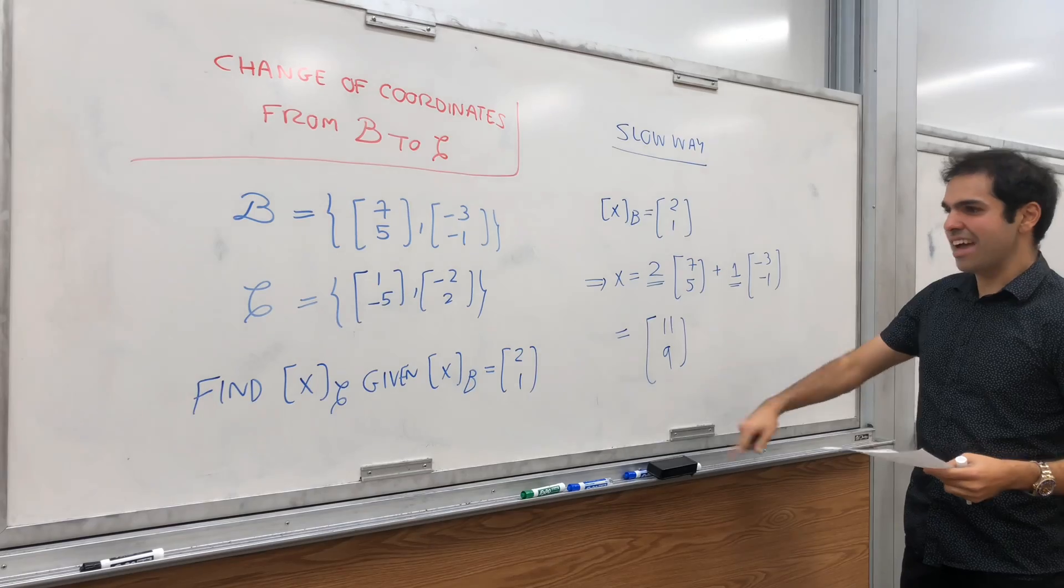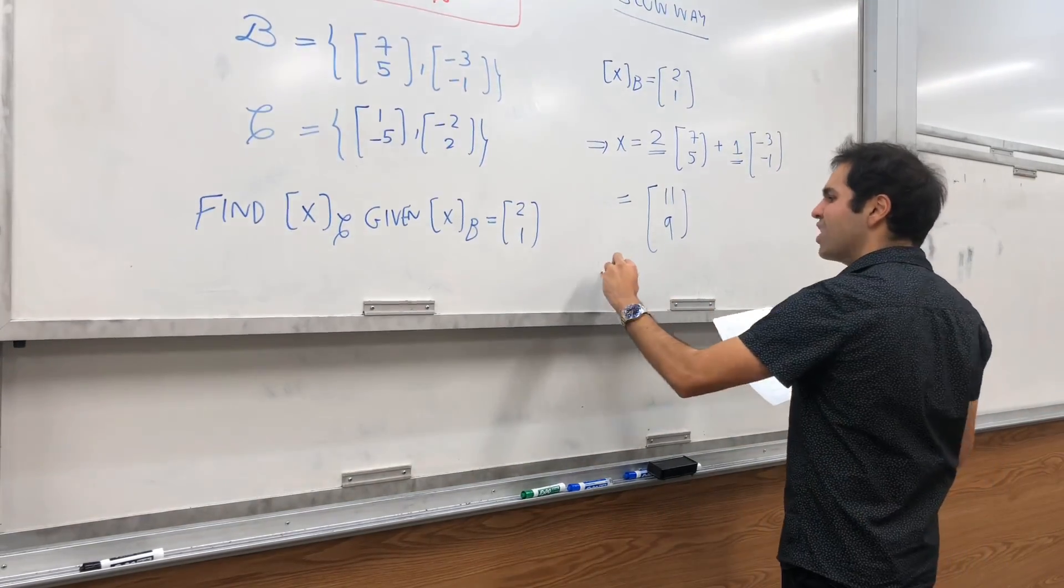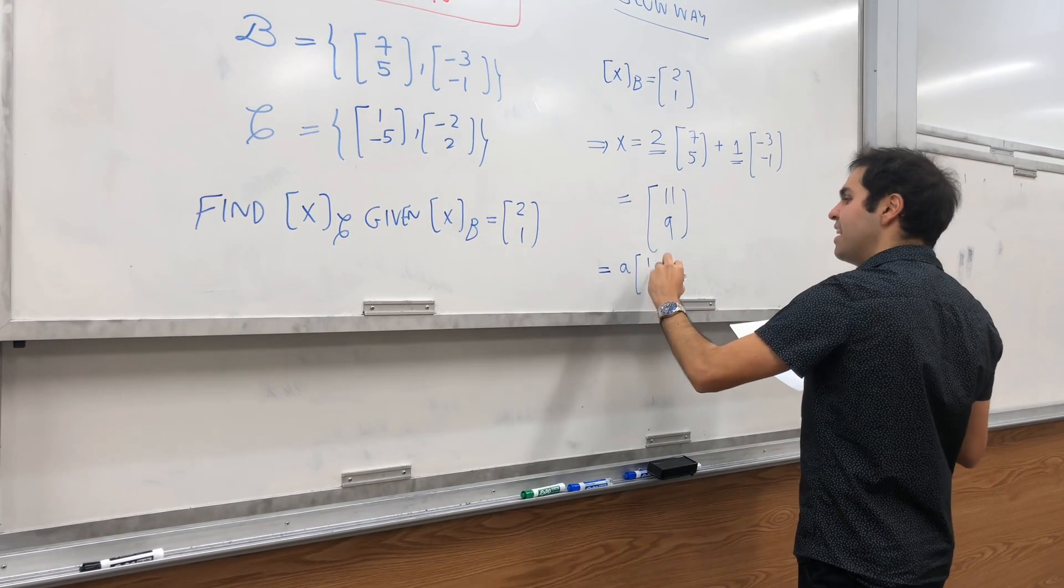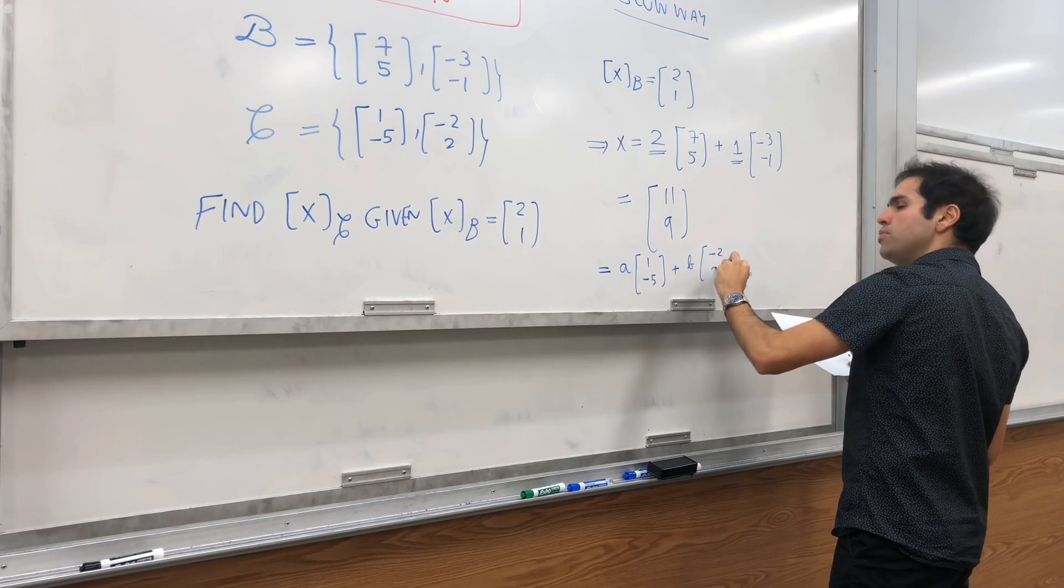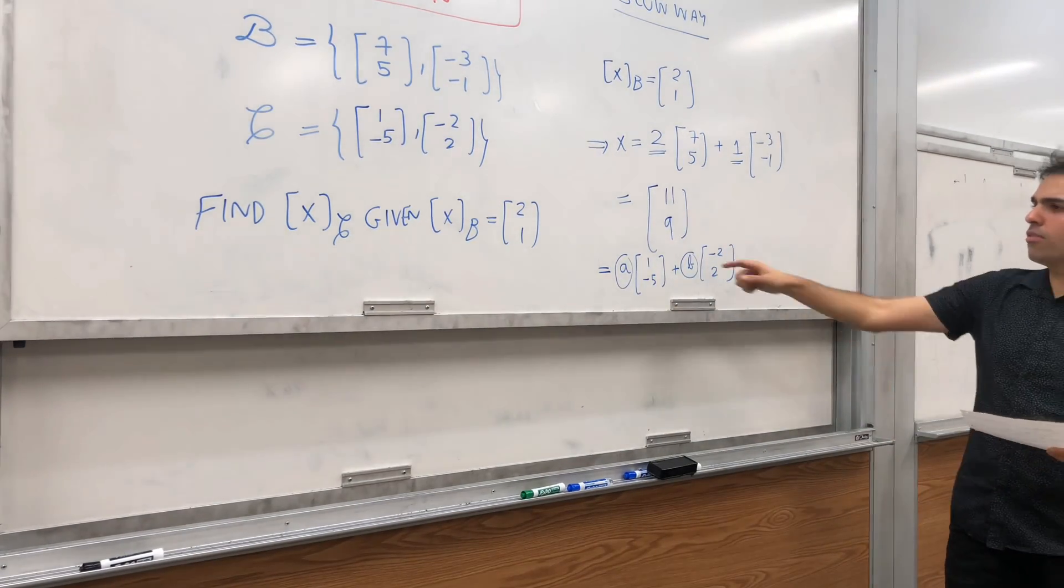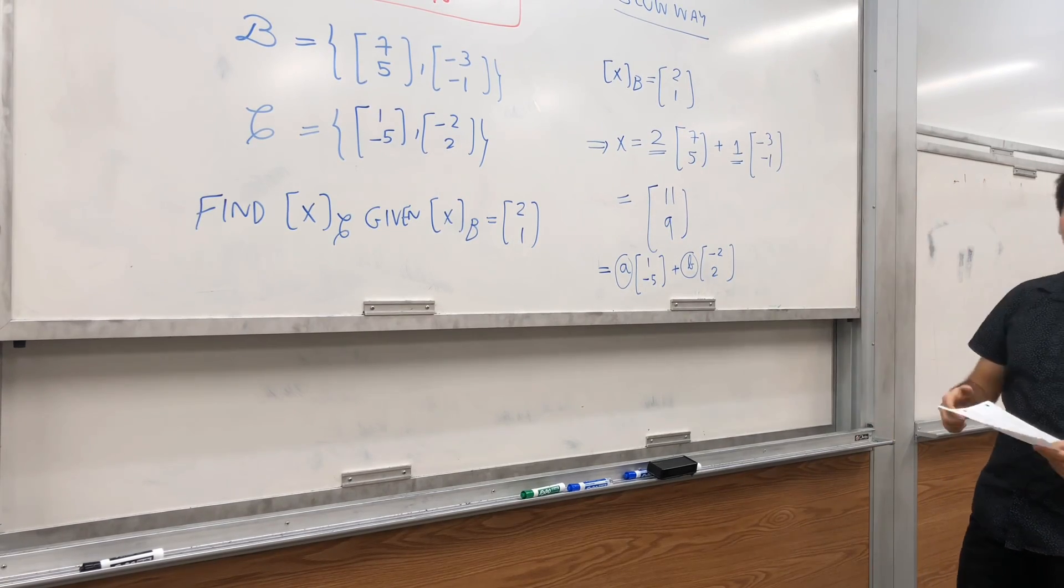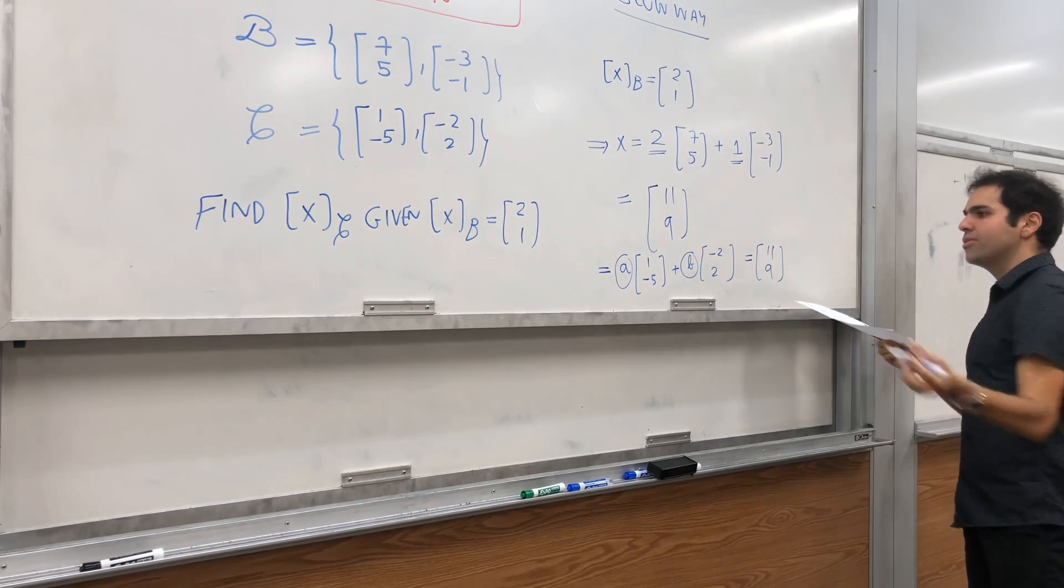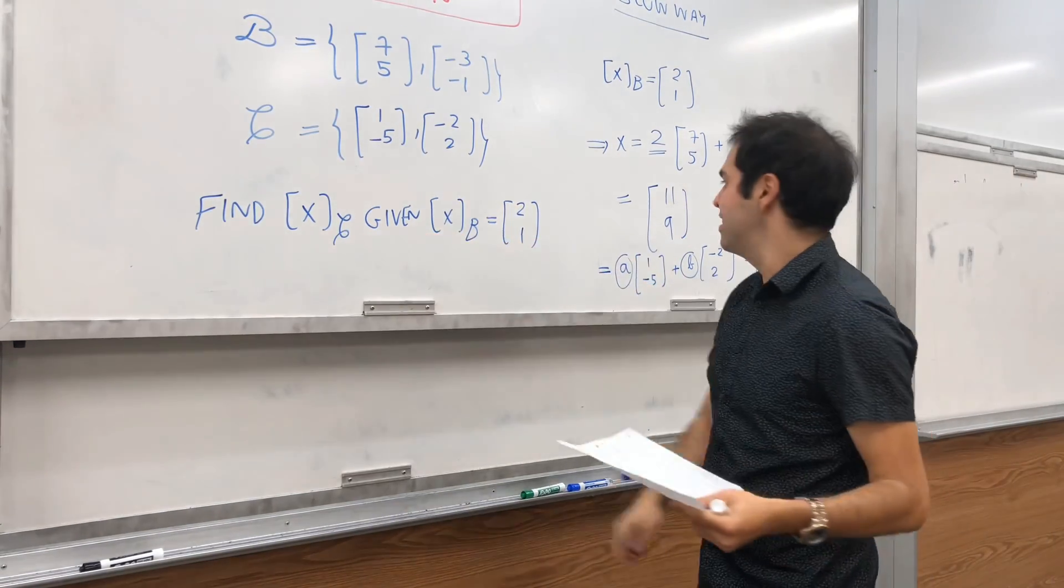And then, you have this vector, and then to find XC, it really means, can you find coefficients A and B, such that 11, 9, it's A times 1 minus 5, plus B times minus 2, 2. And if you find A and B, in other words, if you solve this system of equations, then you do get your XC. So, if you set this equal to 11, 9, and you find A and B, you get your coordinate XC.